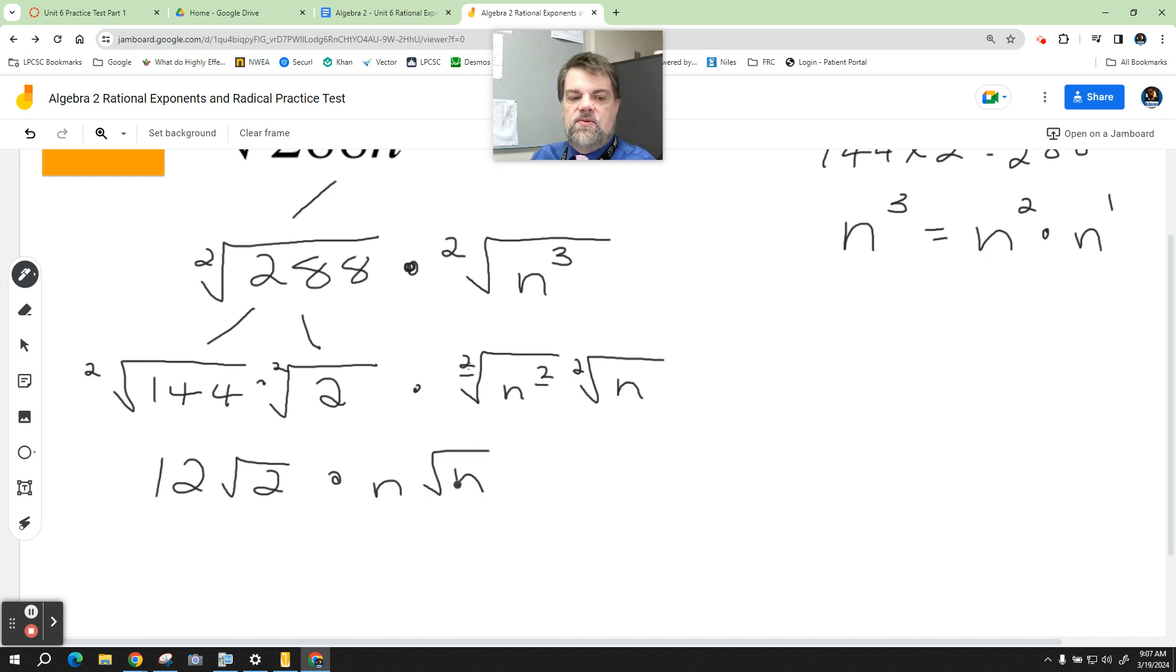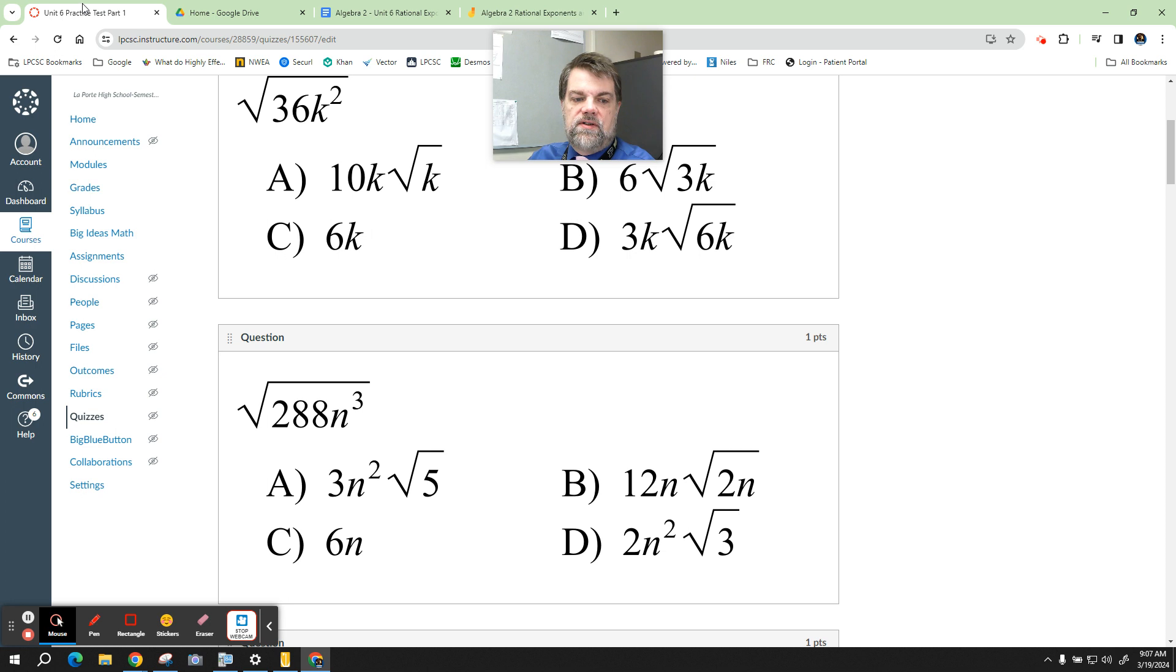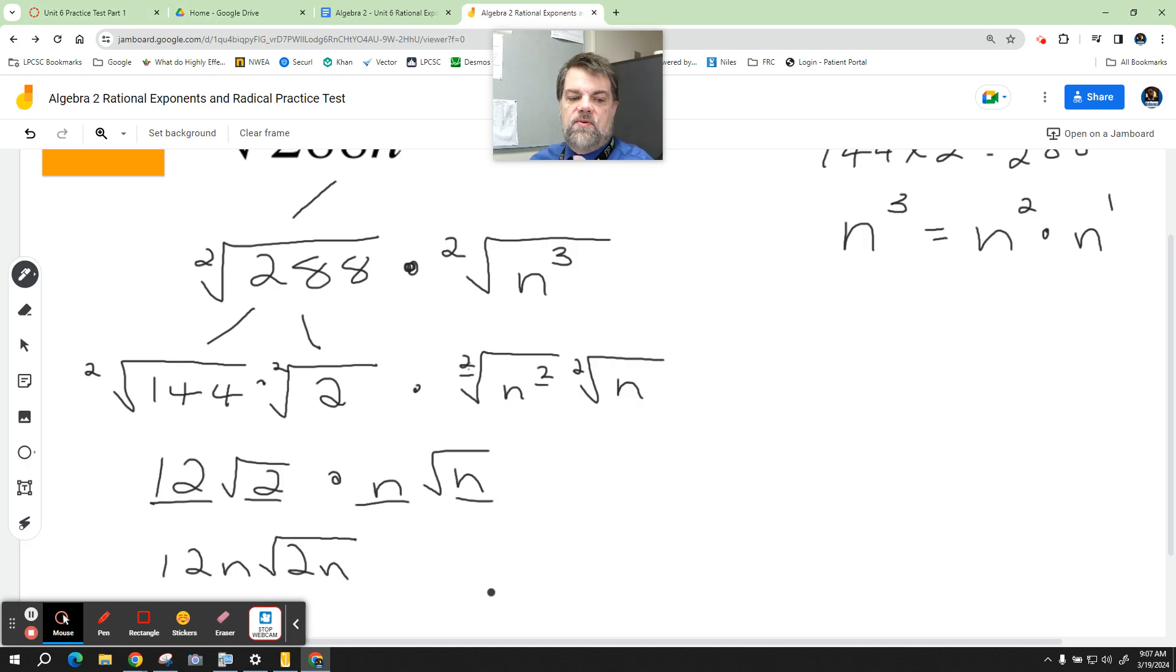Now there's a couple ways we can handle this. 12 and n are outside of the radical, so we could toss those together in the front, 12n, and then if I want to, I could put the 2 and the n back under the square root if I want, right? Now the question is, is that one of the solutions? B, right? 12n times the square root of 2n. See how I did that?